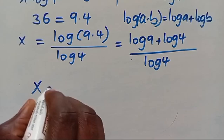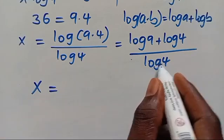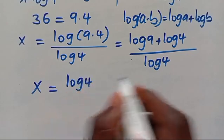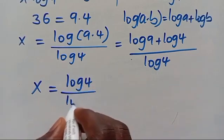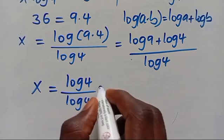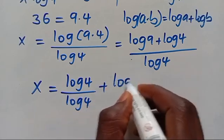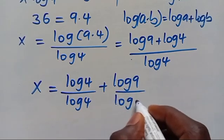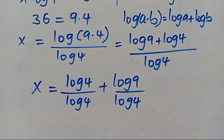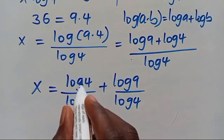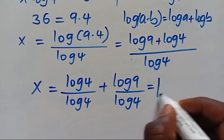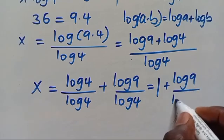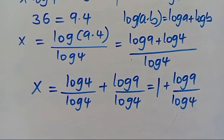So from here, we have x. Let's rewrite this as log 4 divided by log 4, plus log 9 divided by log 4. Log 4 divided by log 4 gives us 1, so here we have 1 plus log 9 divided by log 4.